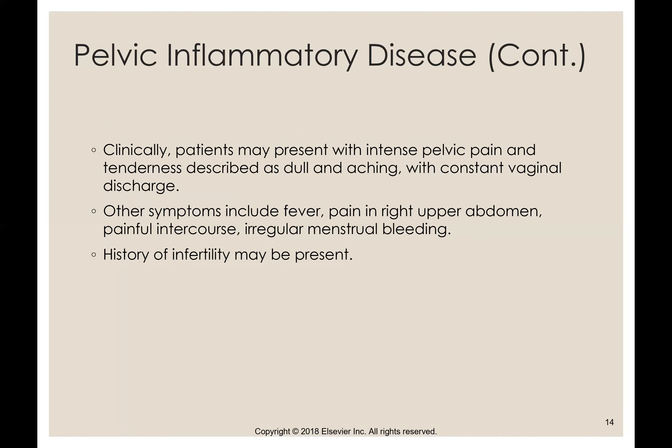There's a really good table in your book — table 45-1 — which I really like, because it compares the differences between salpinitis, hydrosalpinx, and pyosalpinx, so I would definitely study that one. The other box that's pretty good is box 45-2, which describes the different stages of pelvic inflammatory disease. If you guys would look and study both of those boxes, those will help you out.